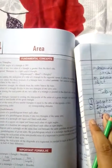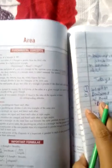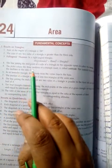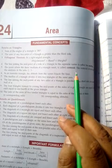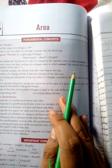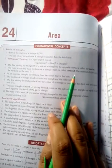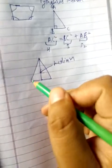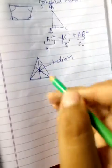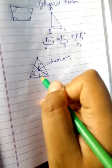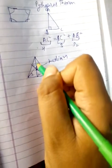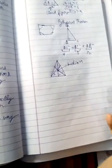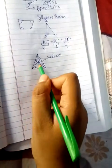The point where the three medians of a triangle meet is called the centroid. The centroid divides each of the medians in the ratio 2:1. So if there are three medians, the centroid always divides each of them in the ratio 2:1.